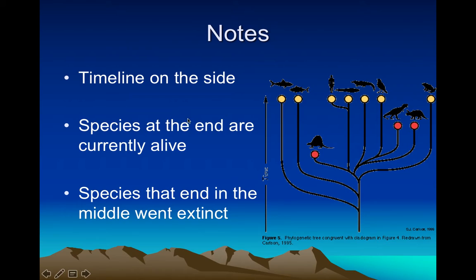Some things to note: there is a timeline on the side. The species at the end of the timeline are currently alive — here they're color-coded with a yellow dot to indicate they're alive at the current time. Species whose lines end in the middle went extinct, and we can see those represent different dinosaurs that are now extinct.